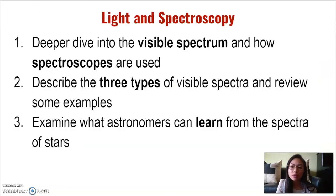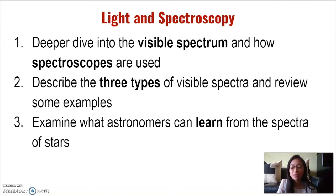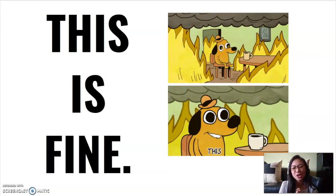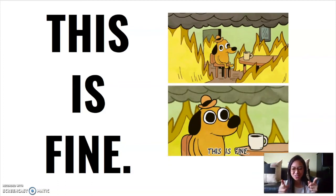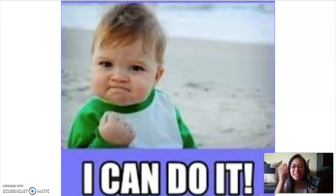So in this video, we've addressed topics about light and spectroscopy. We've taken a deeper dive into the visible spectrum and talked about how spectroscopes are used. We described three types of visible spectra and reviewed examples of each. And finally, we examined what astronomers can learn from the spectra of stars. Thank you so much for tuning in — I hope you learned something new. And always remember: this is fine, and I can do it. I'll see you in the next video!